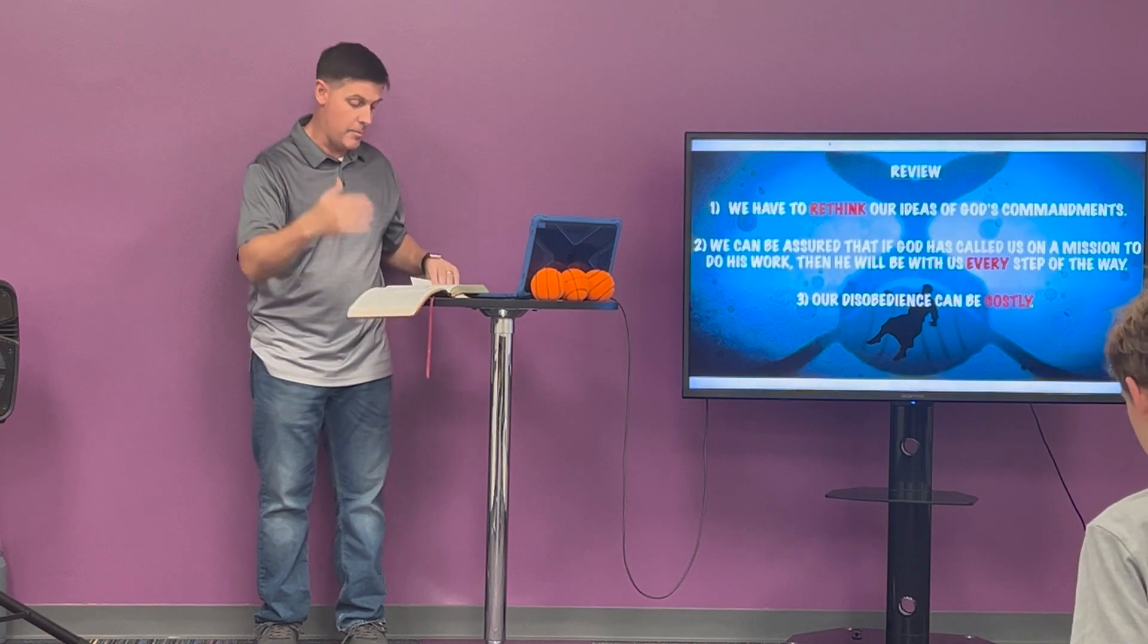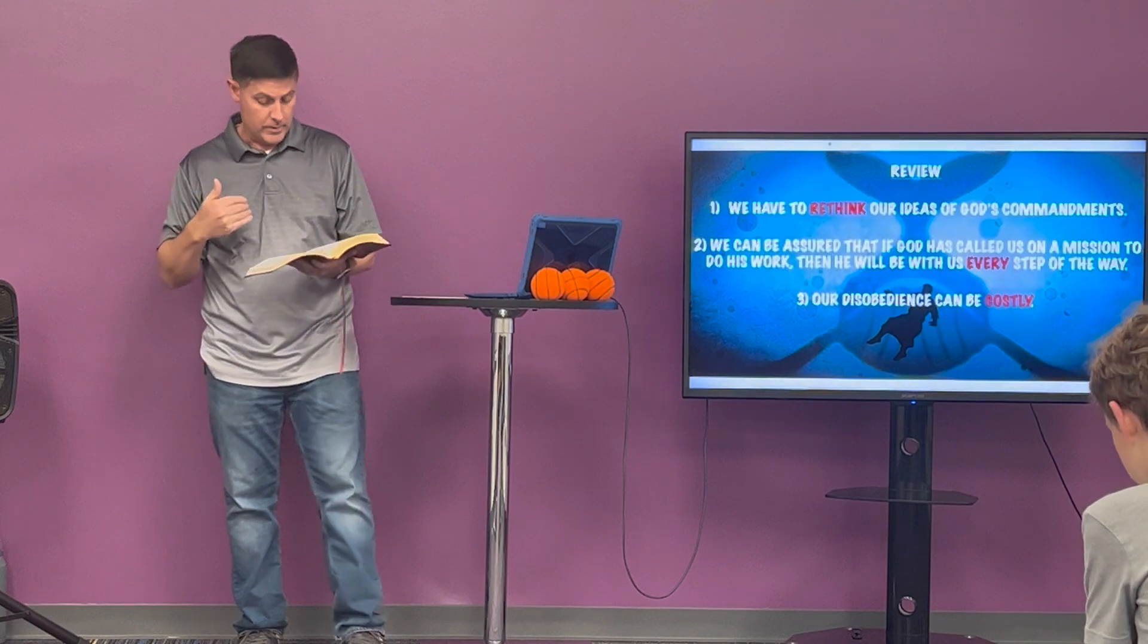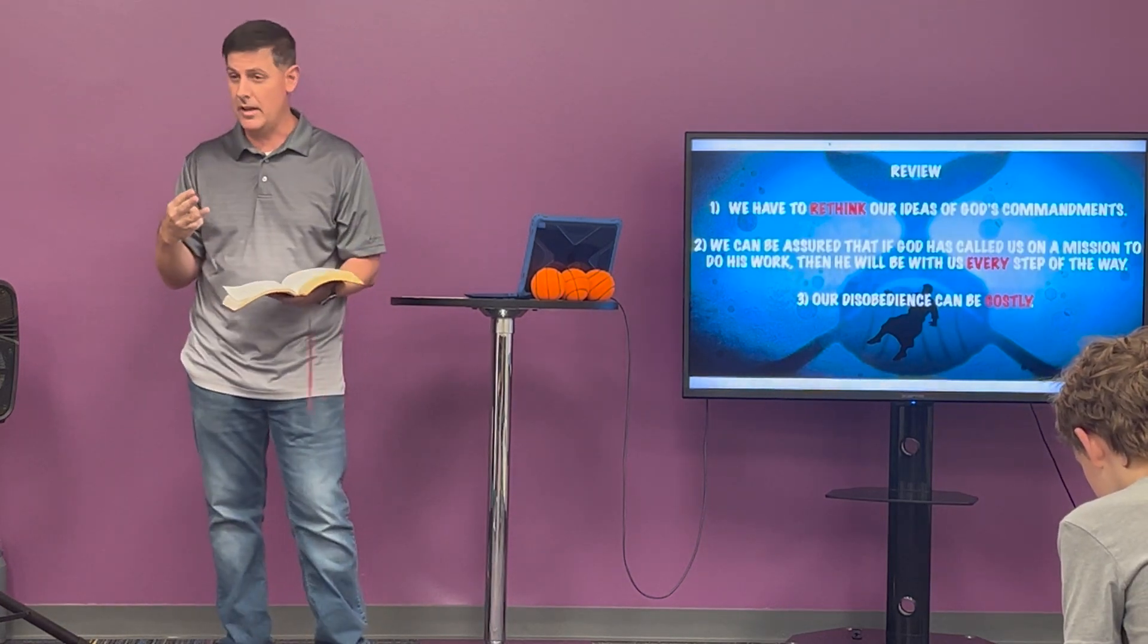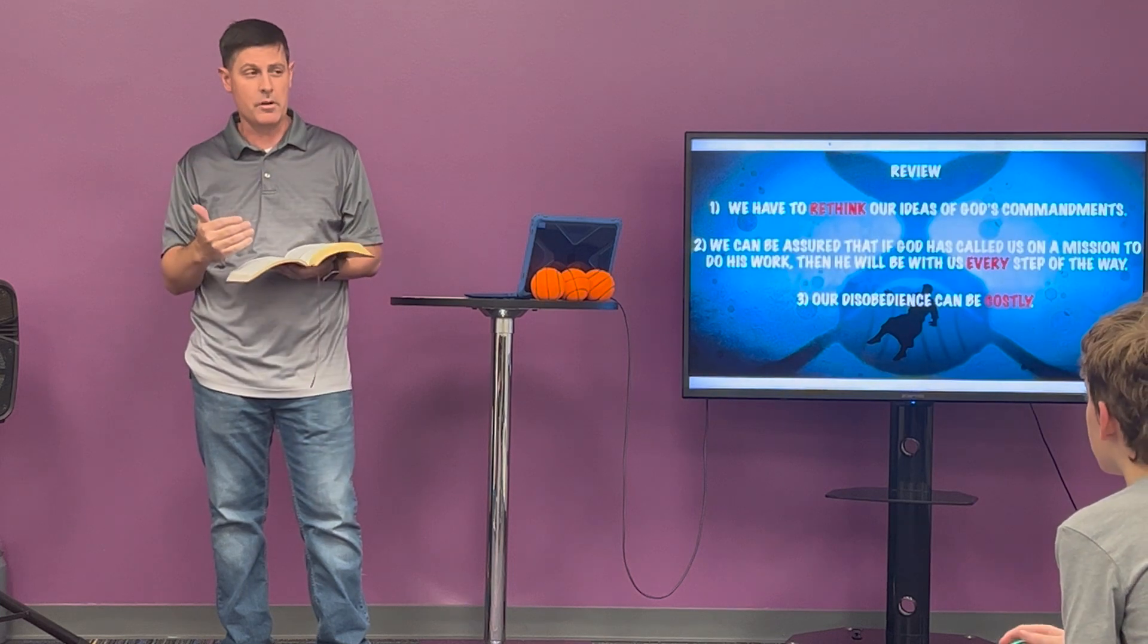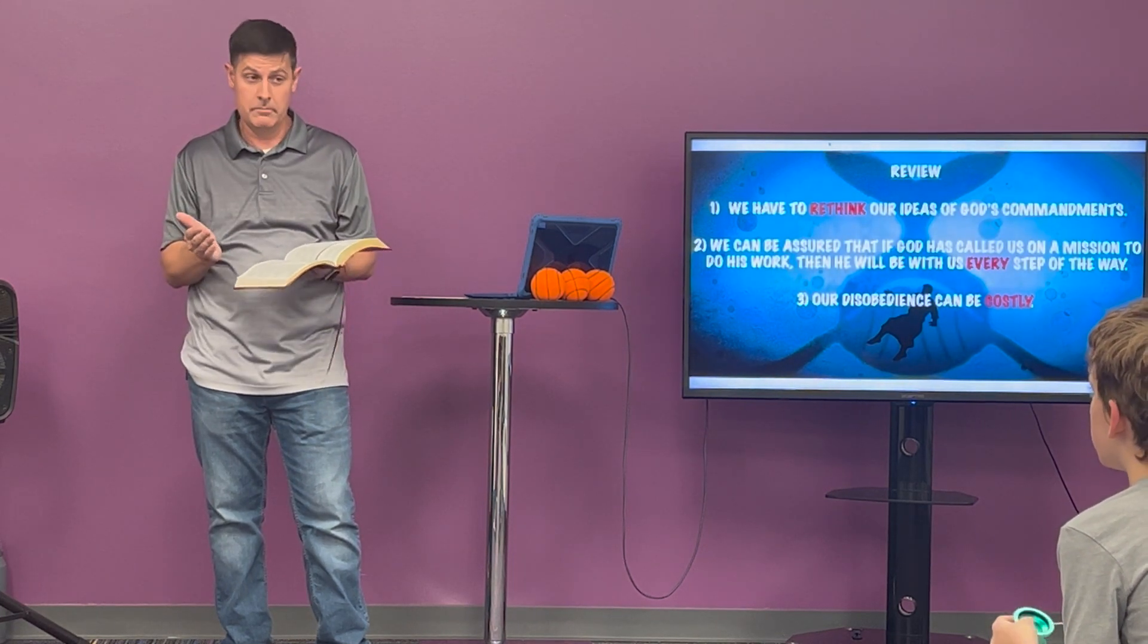And so in chapter one, we ended last week with, they knew it was Jonah. Jonah admitted he had done wrong. God was punishing him. They threw him overboard into the water. The storm stops immediately. And everybody goes, one of the greatest things about that is everybody on that boat who had probably never heard about God before, the God, our God, they looked at him and, hey, the God of Jonah is the real God. Everyone on that boat admitted it at that point. So there was some good that came of that.